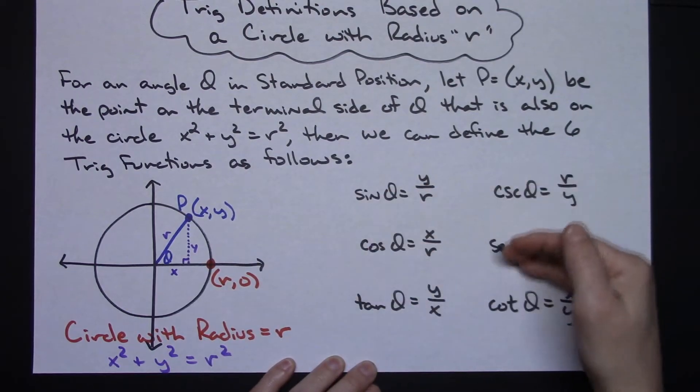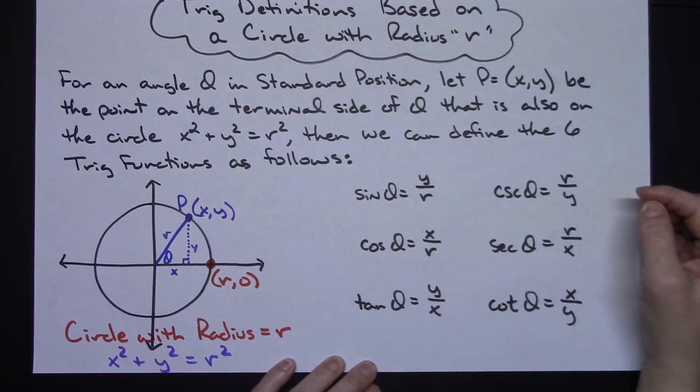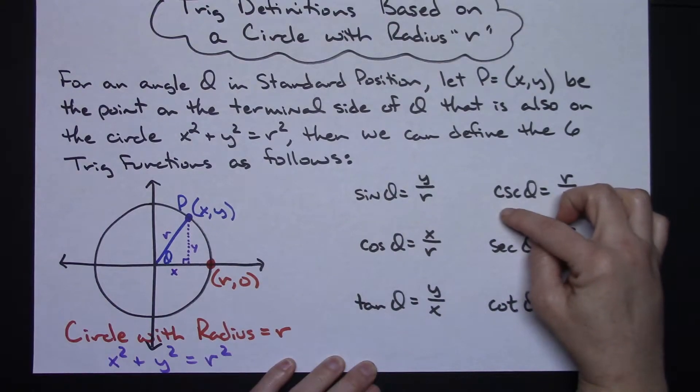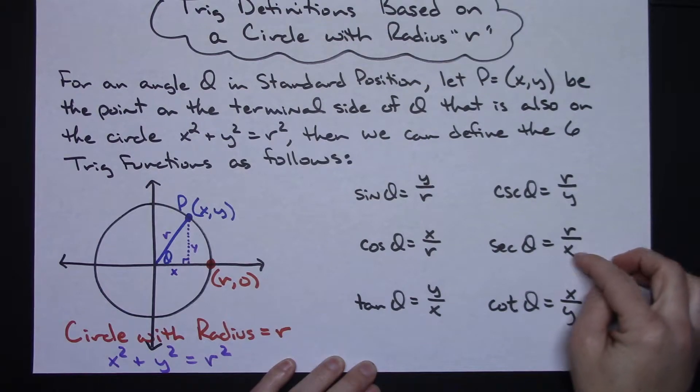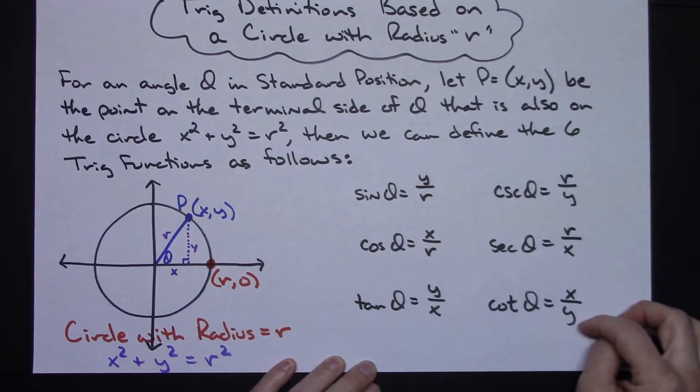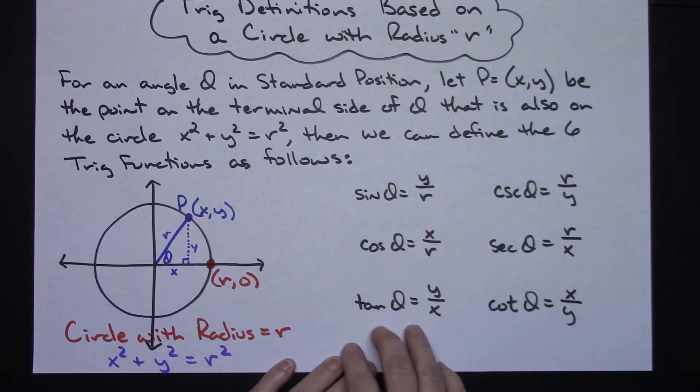if you write them always in this order, are always reciprocals of the first one. So cosecant theta is r over y, secant of theta is r over x, and cotangent then would be x over y. So these three being reciprocals of these.